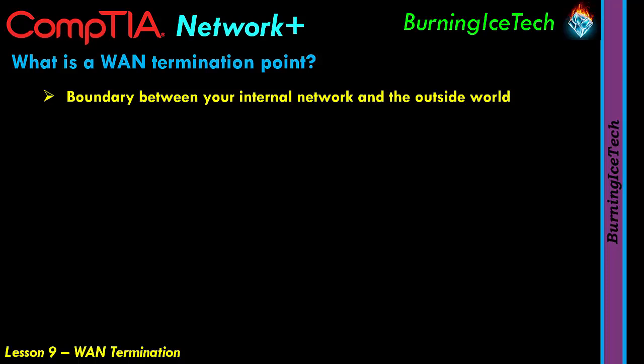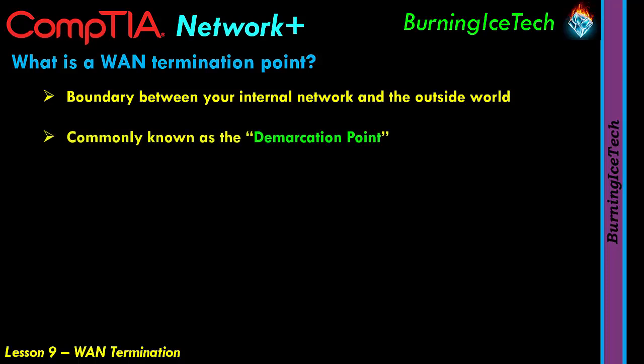A WAN termination point is also commonly known as a demarcation point, or as some might call it a demarc for short. So it's not just called a termination point — it is sometimes referred to as a demarcation point, or in short, we just call it a demarc.